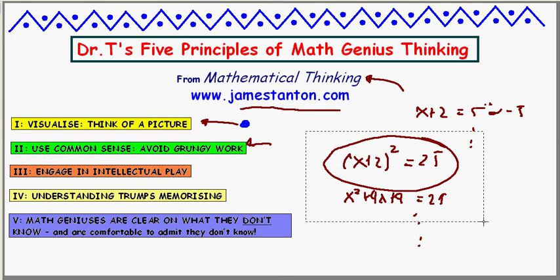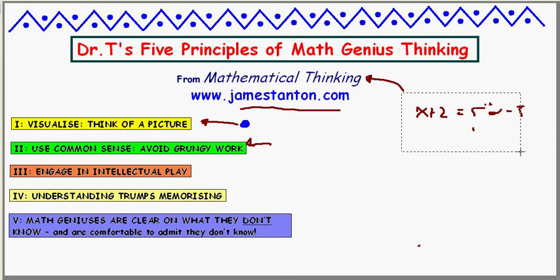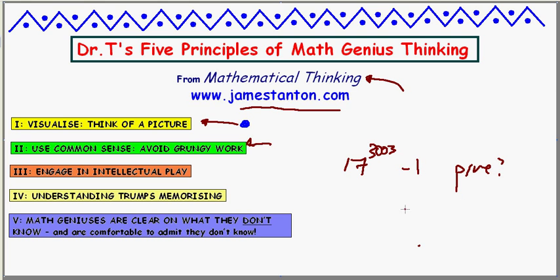I can do other things. I'll give you tons of examples of thinking like a genius. Here's a crazy question that people might think is impossible to know: Is 17 to the three thousandth and third power minus one a prime number? Genius answer: no, it's an odd number raised to an odd power, that's odd, minus one is even, certainly not prime, done.